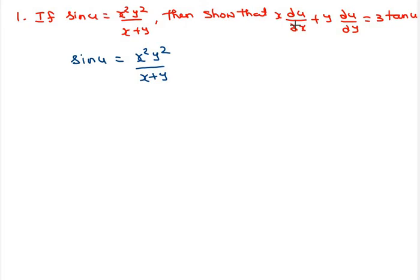Euler's Theorem states that if f is a homogeneous function of degree n, then x ∂f/∂x plus y ∂f/∂y is equal to n times f. So now let the function f be equal to x squared y squared by x plus y.